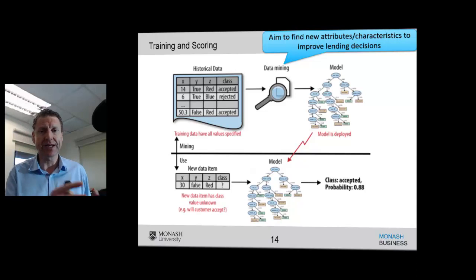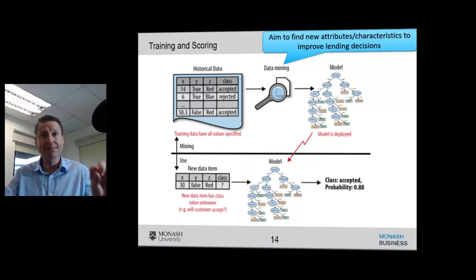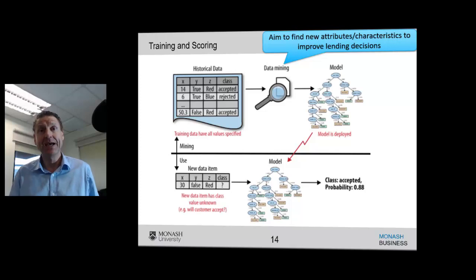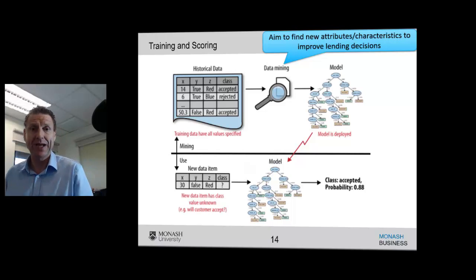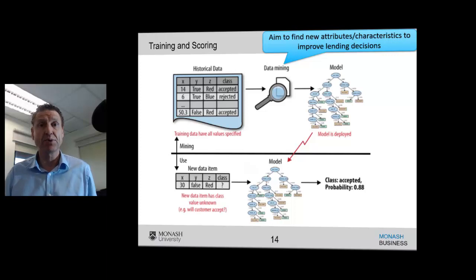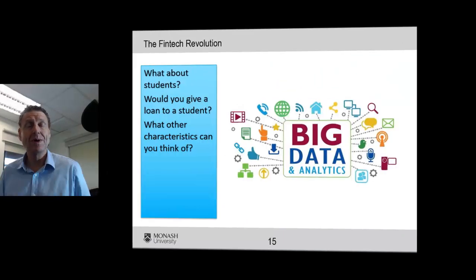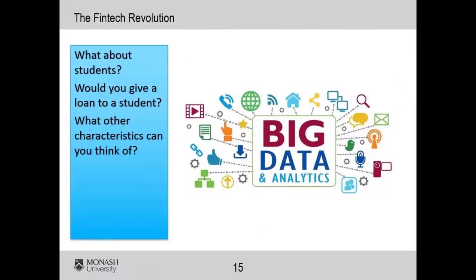What do we mean by training and scoring? First, you get data by giving out loans to lots and lots of people. Each person becomes another row in the database. Then you data mine it and run algorithms to predict the likelihood that they will pay back a loan, throwing in different characteristics and demographics of the people as variables. You try to improve your predictability of someone's potential to pay back a loan. Welcome to the world of big data.